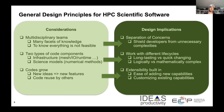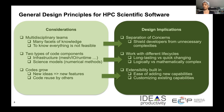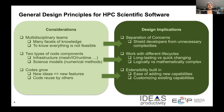The general design principles for HPC scientific software are outlined in this view graph, with various considerations and their corresponding design implications. There are multidisciplinary teams working on these codes — domain scientists, applied mathematicians designing algorithms, and people who bring in software engineering, computer science, and HPC performance considerations. For codes used on HPC platforms, it is not feasible for one person to know everything. The design implication is that separation of concerns must be built in, shielding developers from unnecessary complexity so they can focus on what they know best.